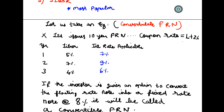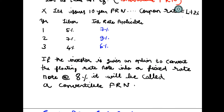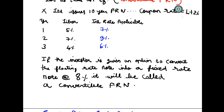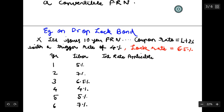Now what is a convertible floating rate note? If the investor is given an option to convert the floating rate note into a fixed rate note at a predetermined rate — say 8% — then this becomes a convertible floating rate note. The investor can choose to convert from floating to fixed at 8% whenever they want. This note which can be converted into a fixed rate note at a predetermined fixed rate is called a convertible floating rate note.